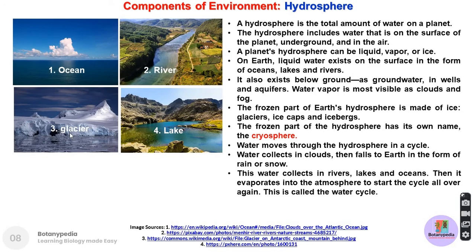The hydrosphere is the total amount of water present on the planet — including underground water, rivers, oceans, and glaciers. A planet's hydrosphere can exist in liquid, vapor, or ice form. On Earth, liquid water exists on the surface in the form of oceans, lakes, and rivers. The frozen part of Earth's hydrosphere — made up of glaciers, ice caps, and icebergs — has its own name: the cryosphere.